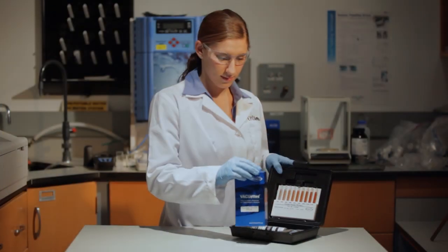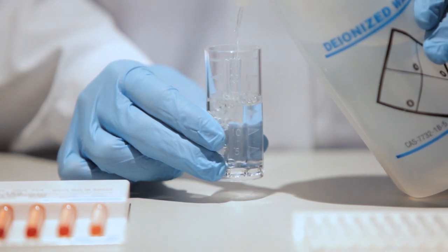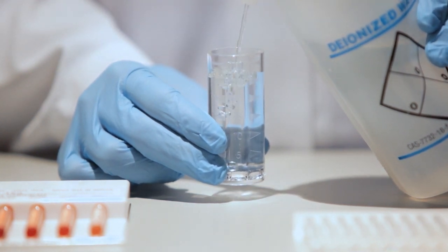To perform a test using VACUETS, fill the diluter snapper cup to the milliliter mark with purified water such as distilled or deionized water.